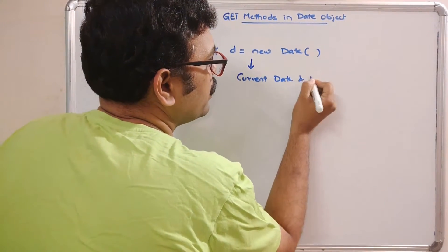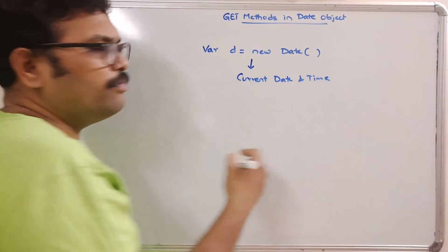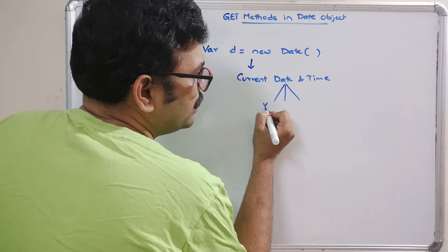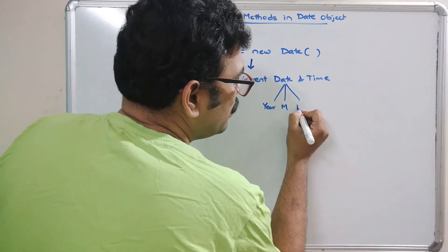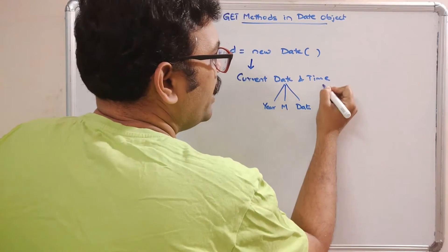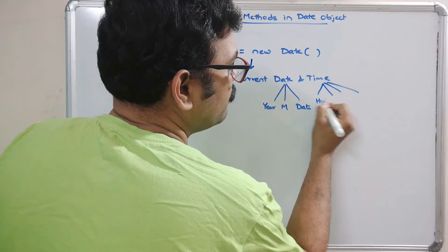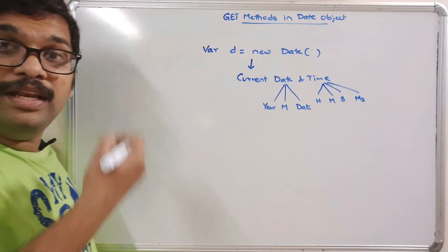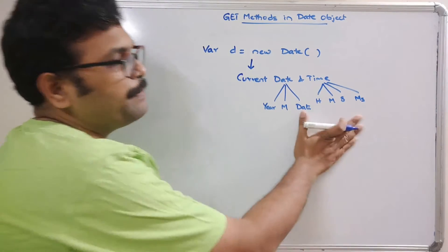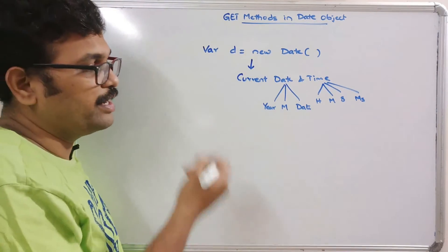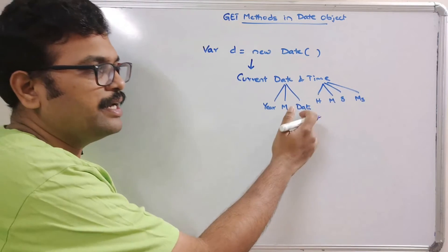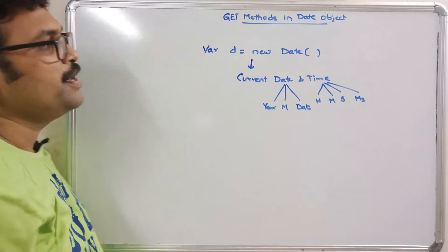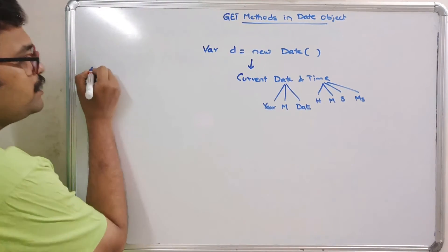A date can be represented by three parameters: year, month, and date. Time can have four parameters: hours, minutes, seconds, and milliseconds. We need to get all these parameters — we can get the year, month, day, hour, minutes, and seconds.